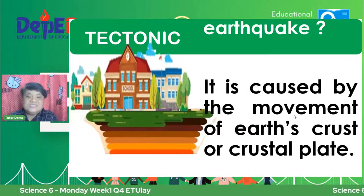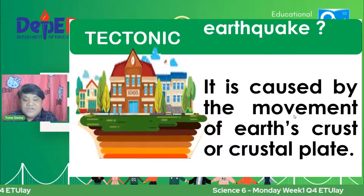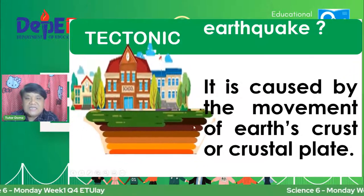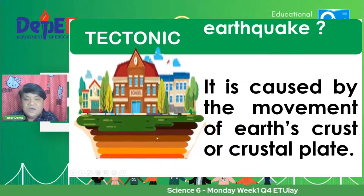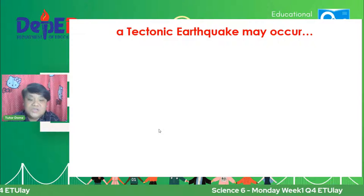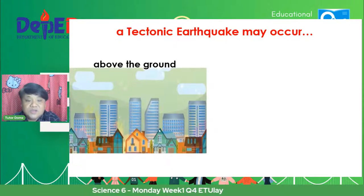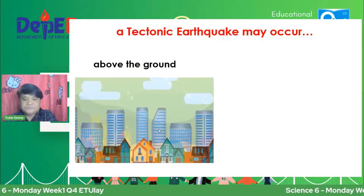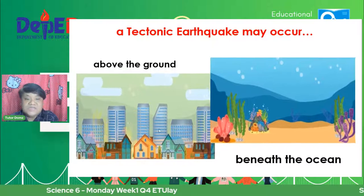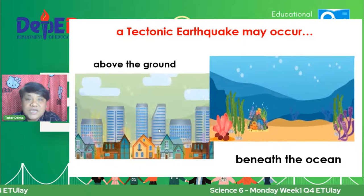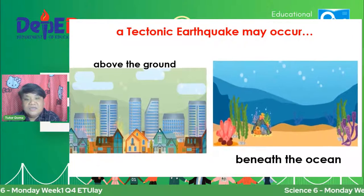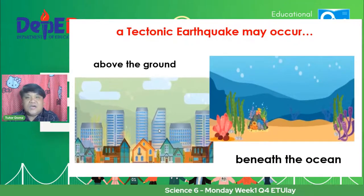Pag naman tectonic earthquake, this is caused by the movement of the Earth's crust or crustal plate. Ito yung pag-move ng mga malalaking bato na nasa kailalim ng ating mundo. Kapag nagkaroon ng pagyanig, pag-dalaw ng mga malalaking bato sa ilalim, makakaroon ng tinatawag na tectonic earthquake. Ang tectonic earthquake nangyayari siya above the ground o sa ibabaw ng mundo, or sa ilalim ng tubig beneath the ocean. Kapag merong beneath the ocean earthquake, magkakaroon ng tinatawag na tsunami.